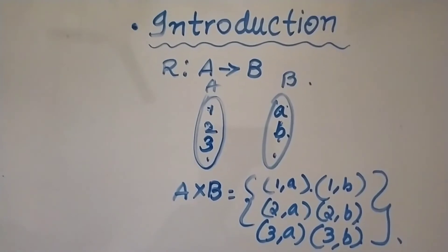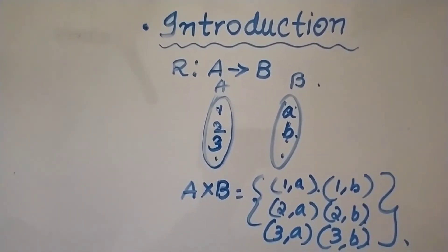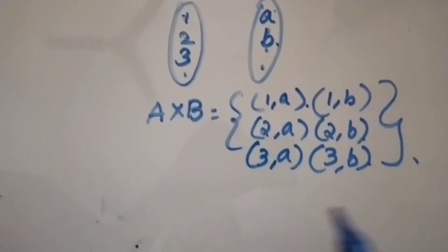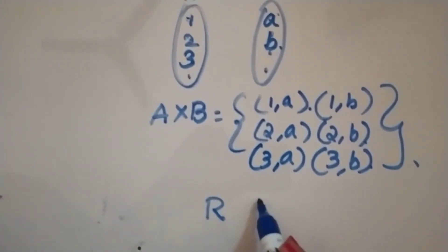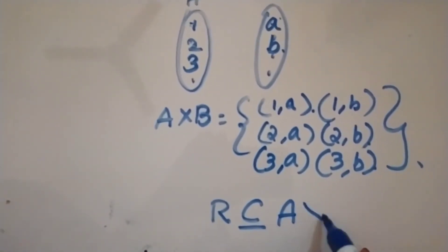The relation will be basically what we select and the way we define it. So R will be the subset of A cross B.